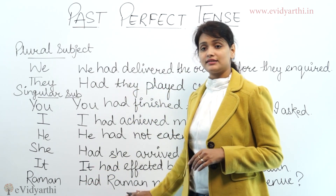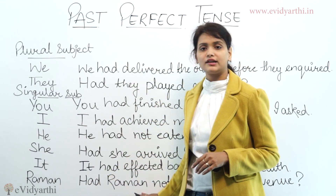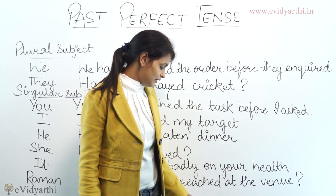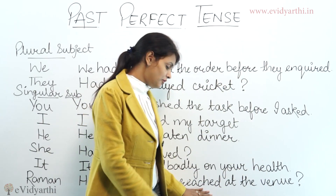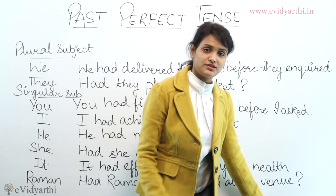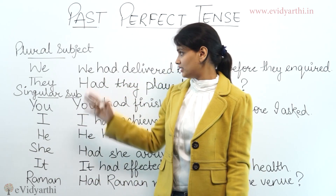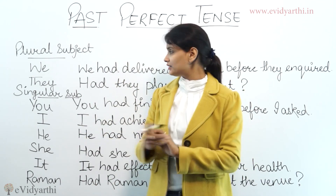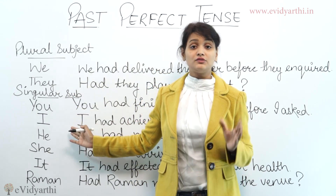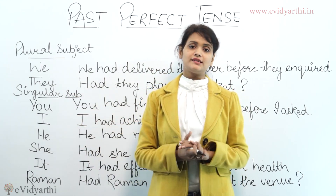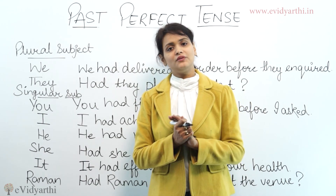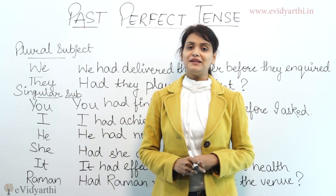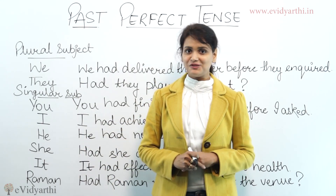We use the third form of the verb and the object of the sentence. In this way, we have learned that in past perfect tense, the helping verb — whether singular or plural — is 'had', and we use it with the third form of the verb. Go through all these rules, learn them, and practice. That's all for now. Bye!